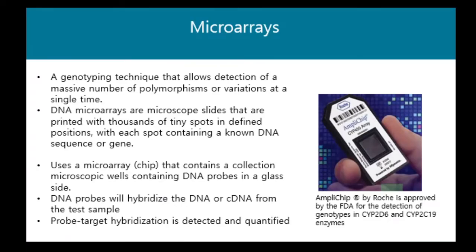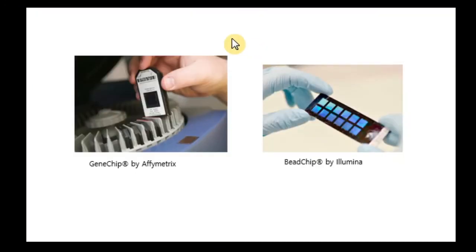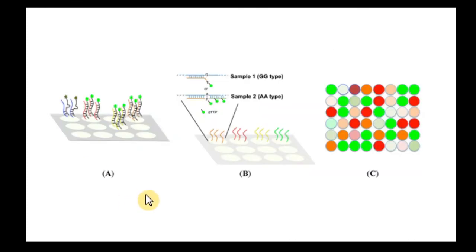Microarray is a technique that allows detection of a massive number of polymorphisms or variations at a single time using a simple chip. For example, a chip can detect genotypes in CYP2D6 and CYP2C19 enzymes. The chip contains many microscopic wells or tiny spots, and each spot contains a DNA probe that detects a specific genetic variation or specific SNP. The DNA probe hybridizes with the DNA or cDNA from the test sample, and this probe-target hybridization emits a fluorescent signal that is detected. Other examples include gene chips, bioinformatics chips, and BIP chips.